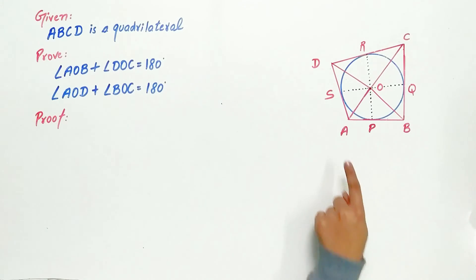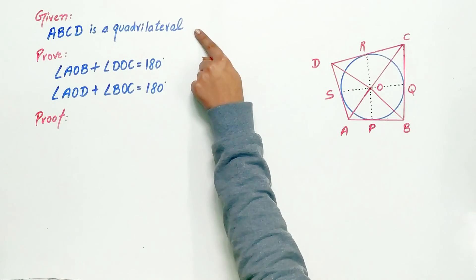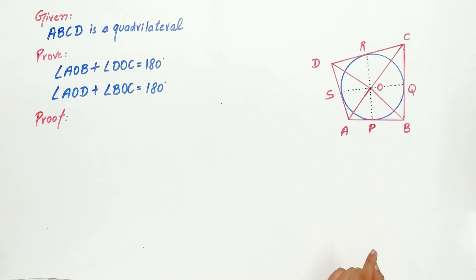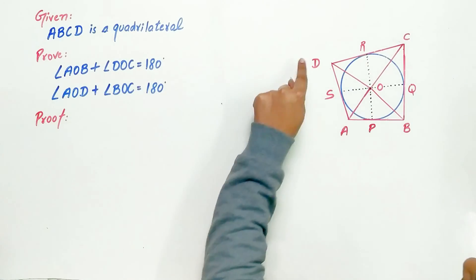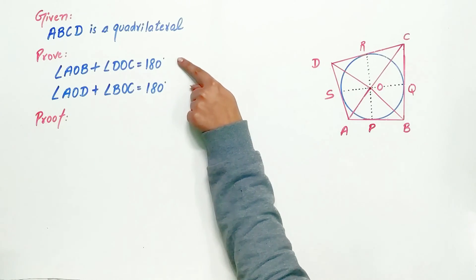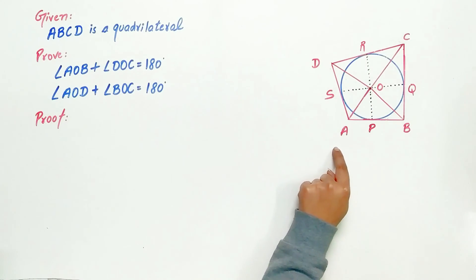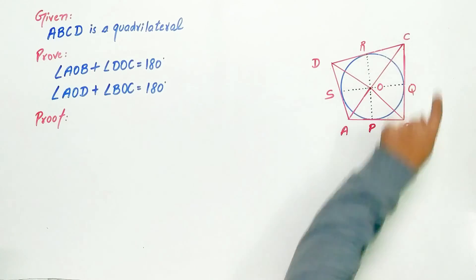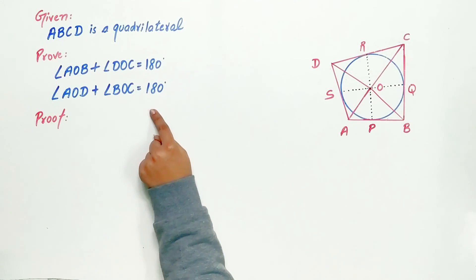It is given that ABCD is a quadrilateral. We have to prove that angle AOB plus angle DOC equals 180 degrees, and angle DOA plus angle BOC equals 180 degrees.